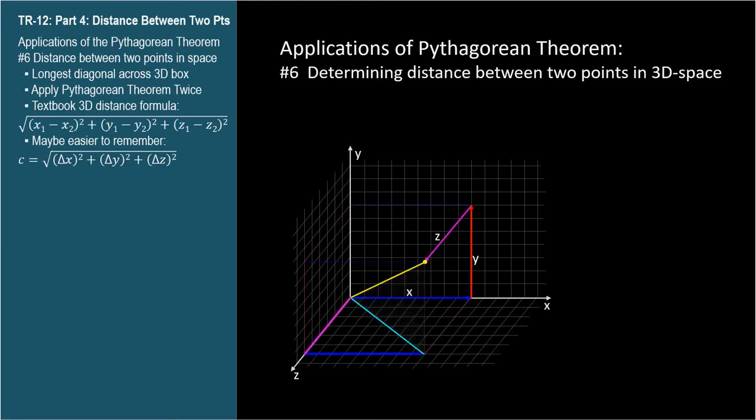Since one of the points is the origin, delta x, delta y, and delta z will simply be the x, y, and z coordinates respectively. But in general, delta x will mean the difference between the x coordinates, just like in TR-11 for the distance between points in a plane.